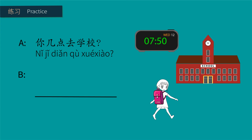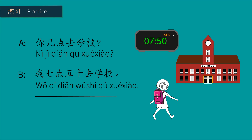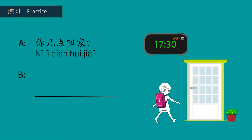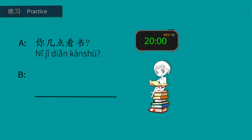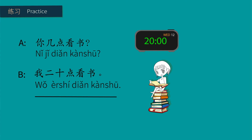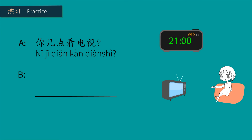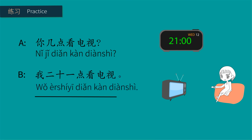你几点去学校? 我七点五十去学校。 你几点回家? 我十七点半回家。 你几点看书? 我二十点看书。 你几点看电视? 我二十一点看电视。